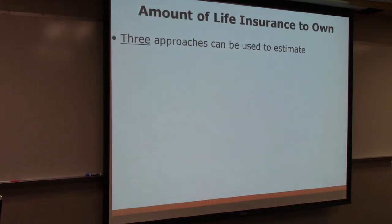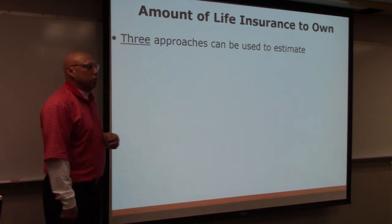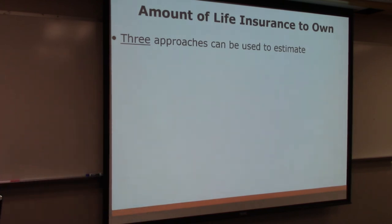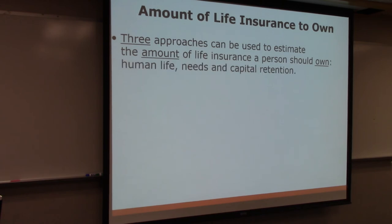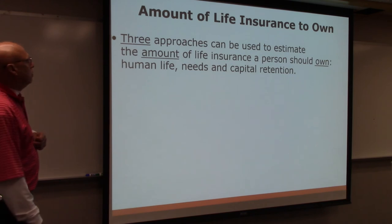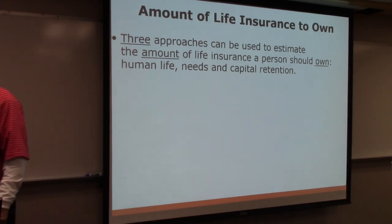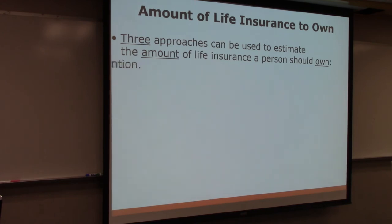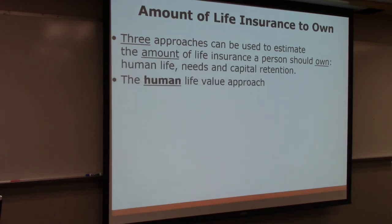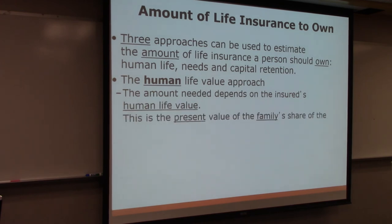How do you determine how much life insurance someone should have? If you ask an insurance agent, they'll say as much as possible. There are three approaches: the human life value approach, the needs approach, and the most conservative — the capital retention approach.